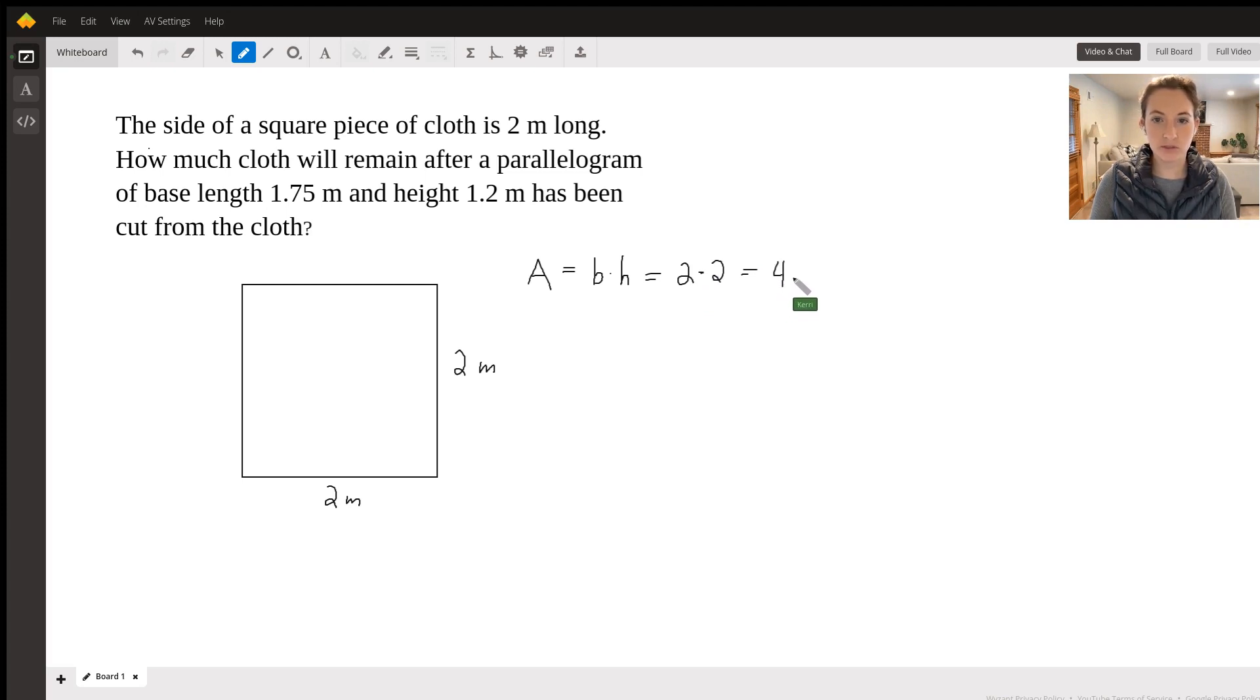And then that would give us four. We should always put our units in, so it would be four square meters or meters squared. You could write it like that or write out square meters. This is for our square.